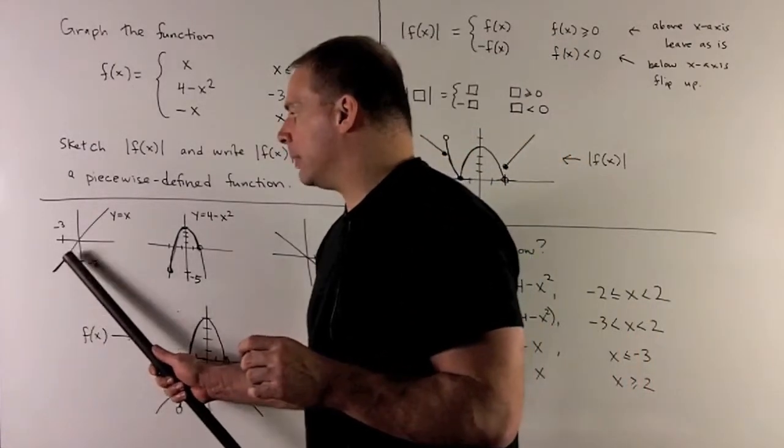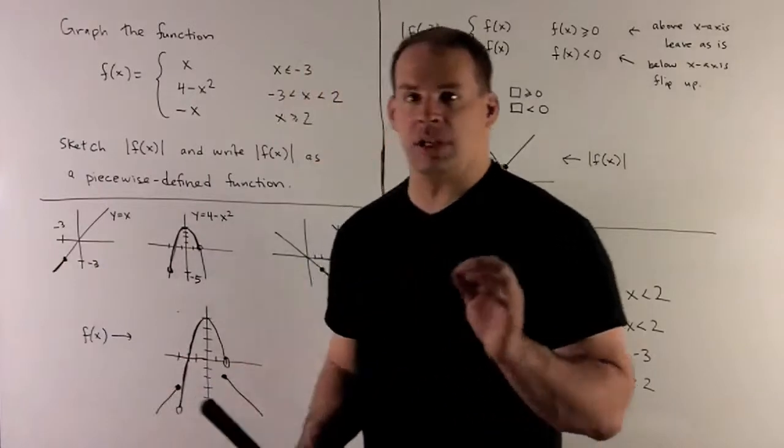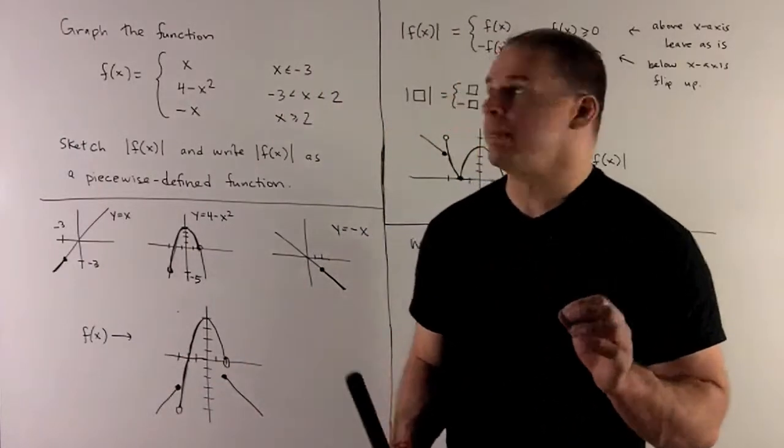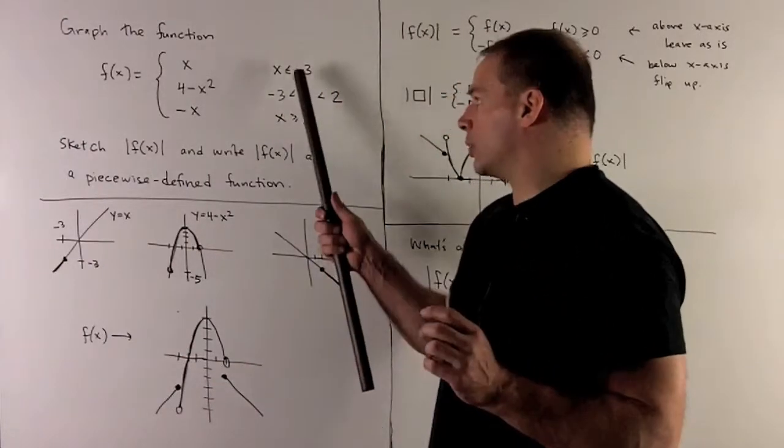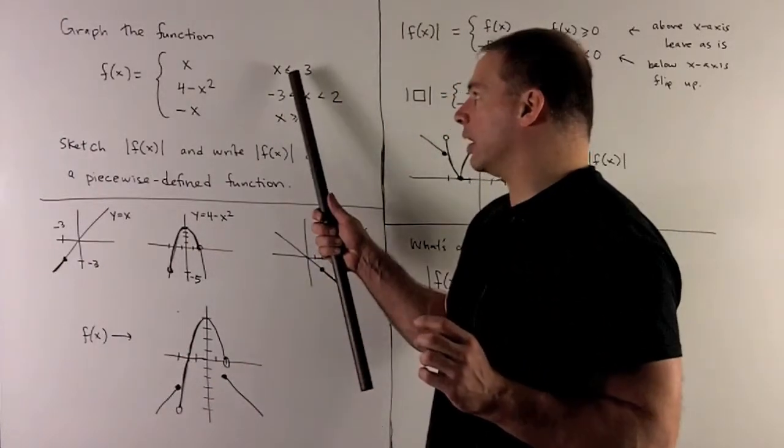Note that we keep the point at x equals minus 3, because we have an equality here.